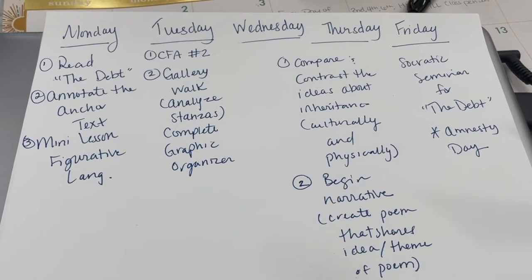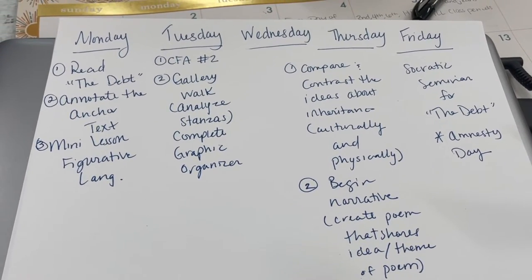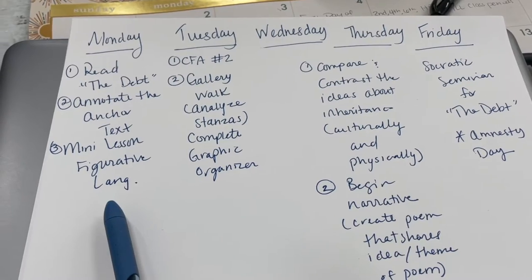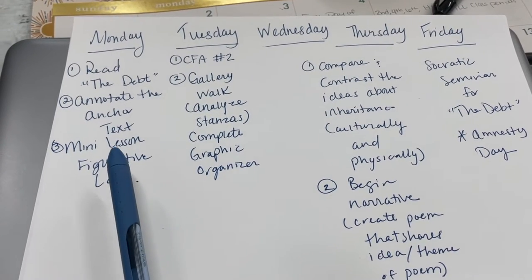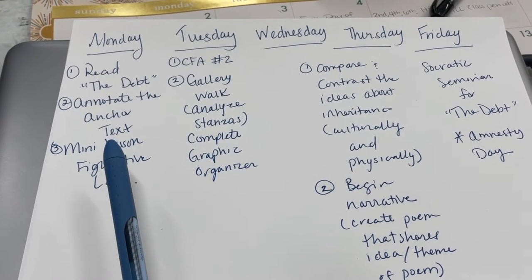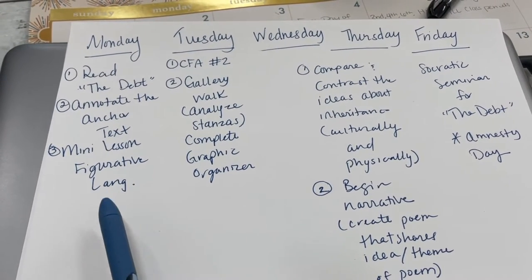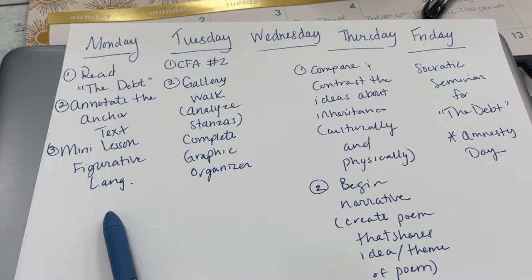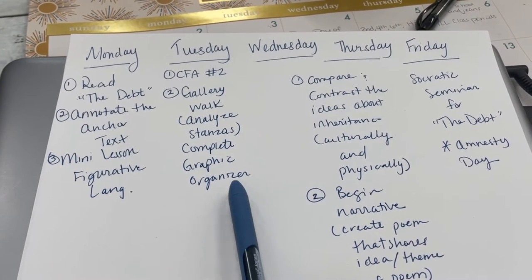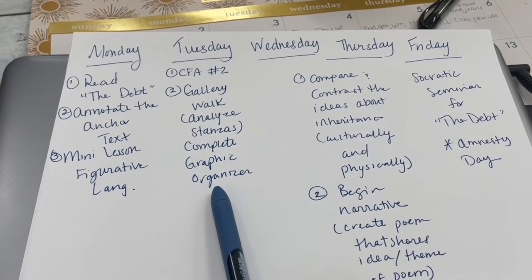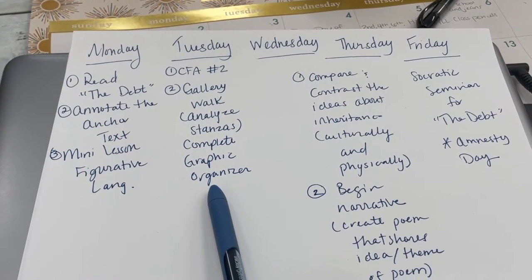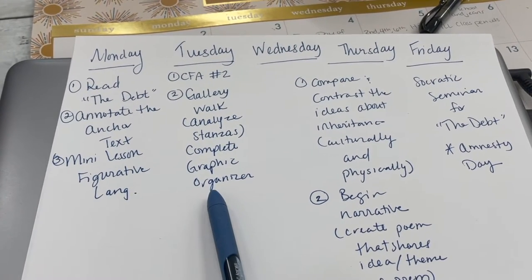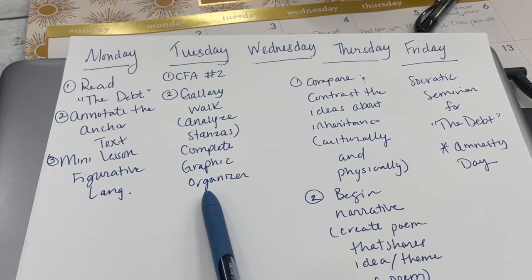Basically everything I just explained, I wrote it out. On Monday, we are going to begin by reading "The Debt" and annotate the text together, then have a mini lesson on figurative language. On Tuesday, as I was writing, I remembered that we will have formative number two. Hopefully we do have time for the gallery walk, but if we don't, it's fine.